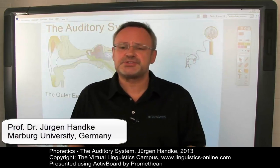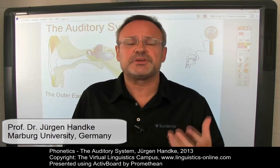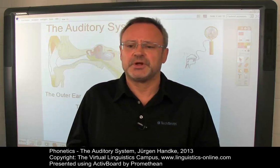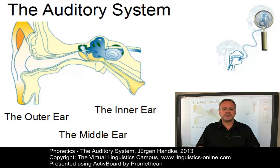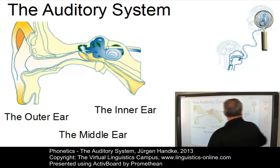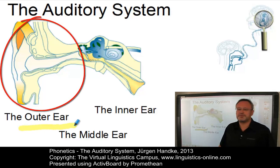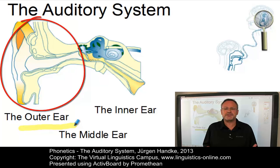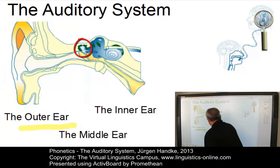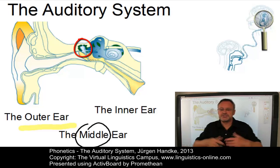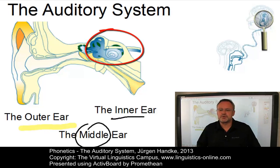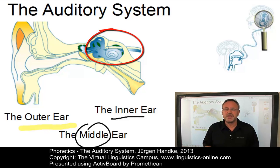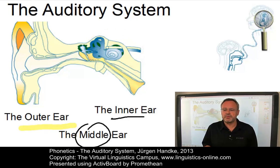The starting point for any auditory analysis of speech is the study of the anatomy and physiology of the ear and the brain. The focus of this e-lecture is the ear, generally referred to as the auditory system. It consists of three central components: the outer ear, which modifies the incoming sound signal and amplifies it at the eardrum; the middle ear, which improves the signal and transfers it to the inner ear, where the signal is converted from mechanical vibrations into nerve impulses and is transmitted to the brain via the auditory nerve. Let us look at these components in more detail.